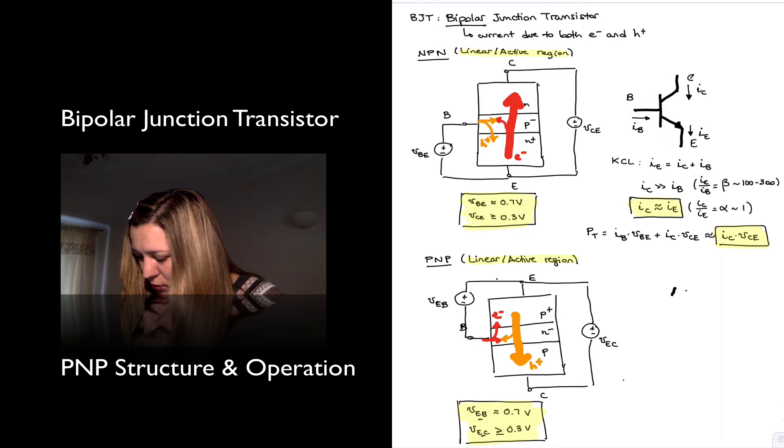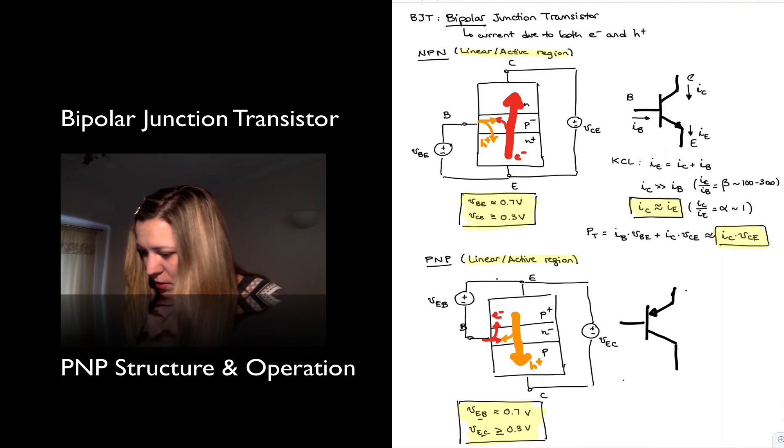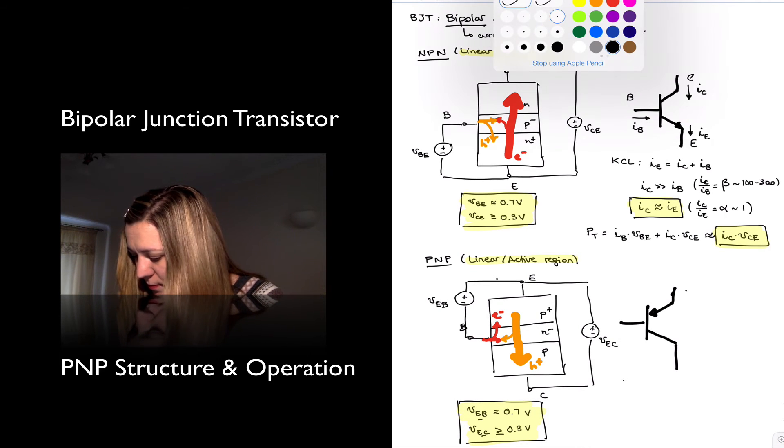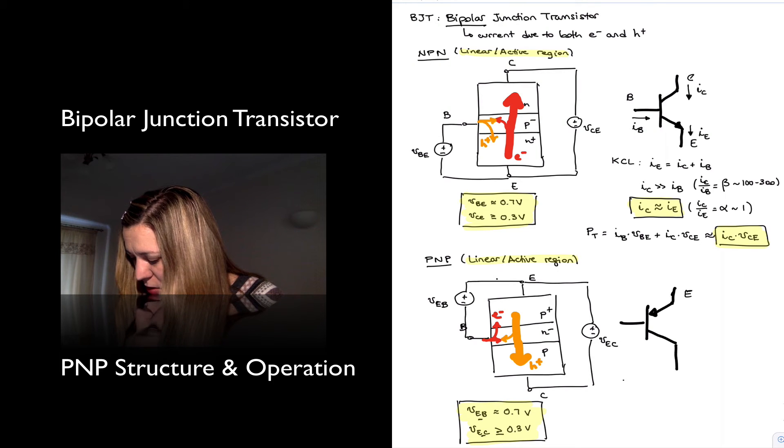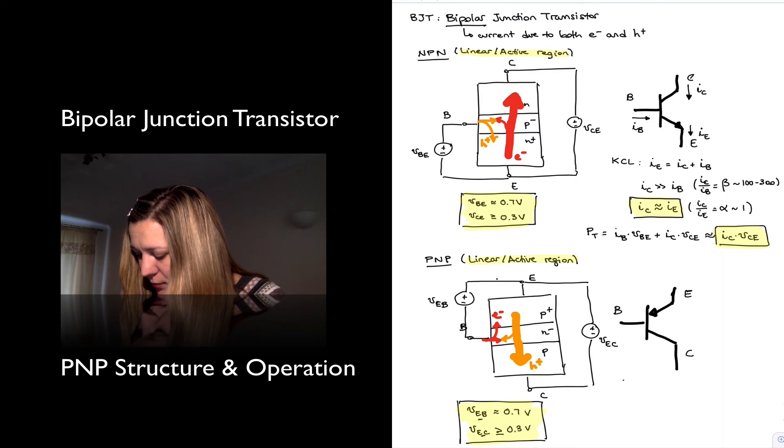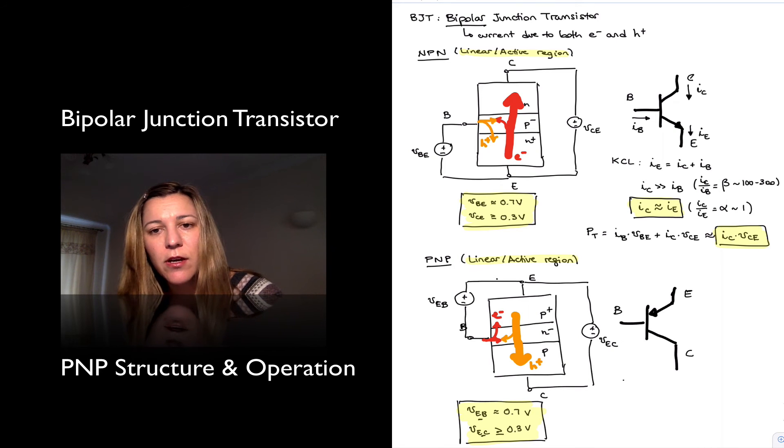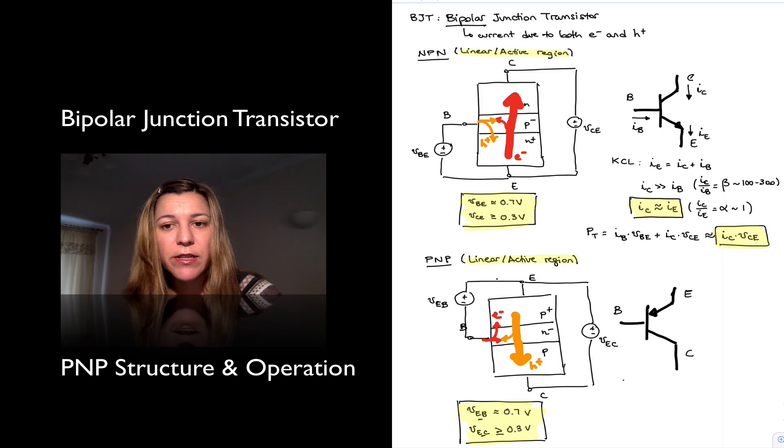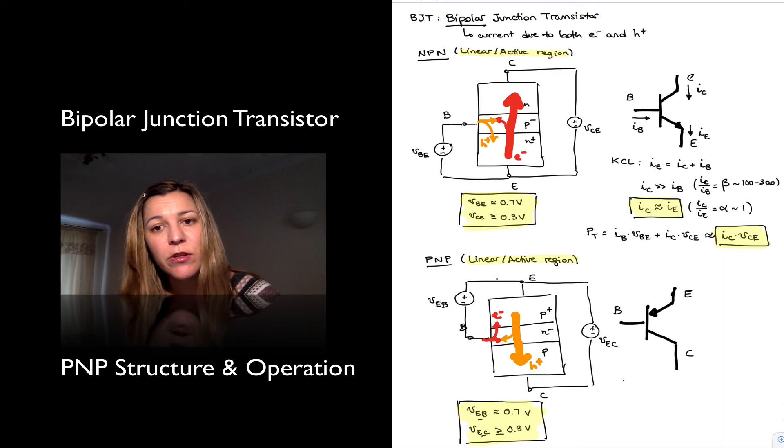And I can write the symbol for my PNP transistor. This will be the emitter, collector, and base. Now notice that with the circuit symbol, the emitter is always marked with an arrow, the emitter terminal. And so the direction of the arrow is the one that will indicate whether it's dealing with an NPN or a PNP transistor. In the NPN, the arrow is pointing outwards because the current is flowing out of the emitter.